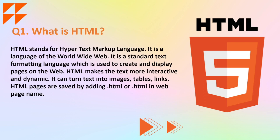HTML makes text more interactive and dynamic. It can turn text into images, tables, and links. HTML pages are saved with the .html extension in the web page name. One thing to note here is you should also mention that we always have a boilerplate available in some text editors, which shows that you know the basic syntax of HTML can be obtained from the boilerplate.